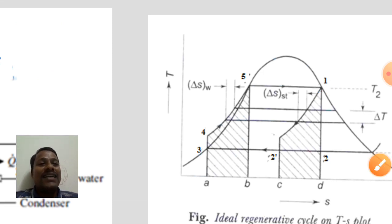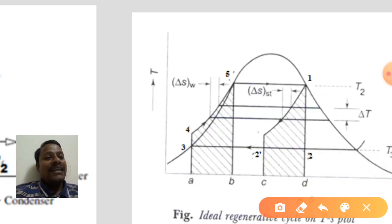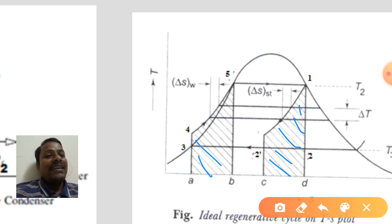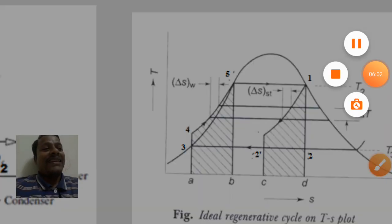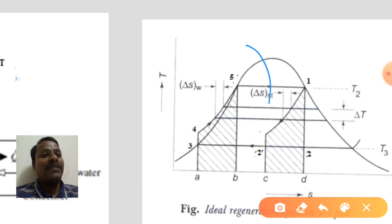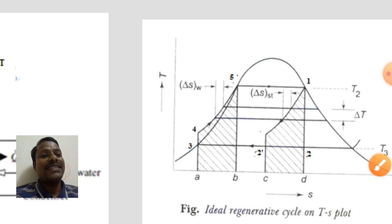On the T-S diagram, the process 1 to 2' and the process 3-4-5 — the areas covered below these two process lines — are equal. Heat energy q1 is supplied between states 5 and 1, and heat energy q2 is rejected between states 2' and 3.